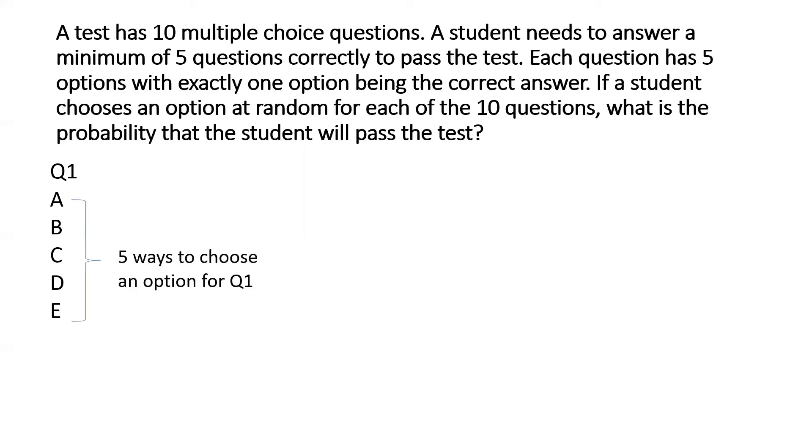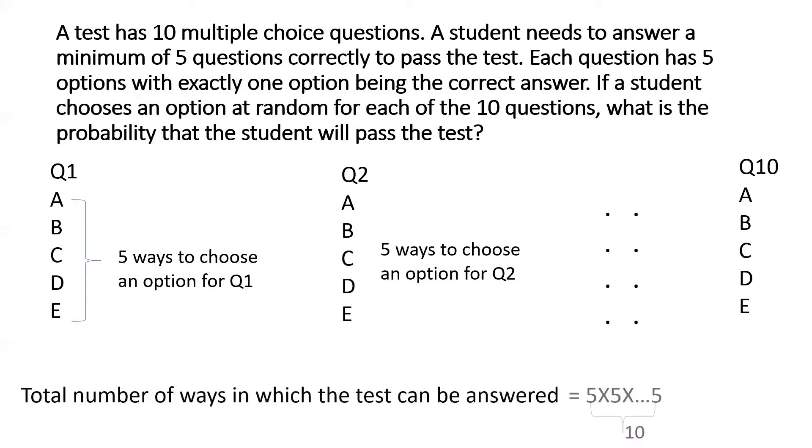Similarly for question 2, it's the same thing. It has 5 options, can choose any one of 5. So there are 5 ways to choose an option for question 2, and so on for all 10 questions. So the total number of ways a student who is picking at random a choice for each question can answer the test is 5 multiplied by 5 multiplied by 5, 10 times. So that makes it 5 to the power 10.